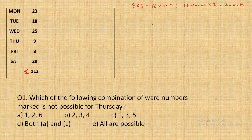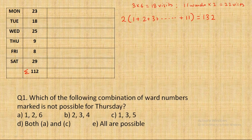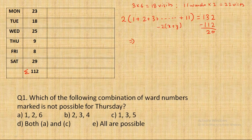One more small calculation: if all 11 wards were visited twice, the sum of all their ward numbers would be 1+2+3+...+11 = 66, times 2 = 132. But in reality the sum of all visits was 112. Subtracting: 132 − 112 = 20. So if x and y are the two ward numbers never visited, then 2(x + y) = 20, which means x + y = 10. This is going to help us a lot.